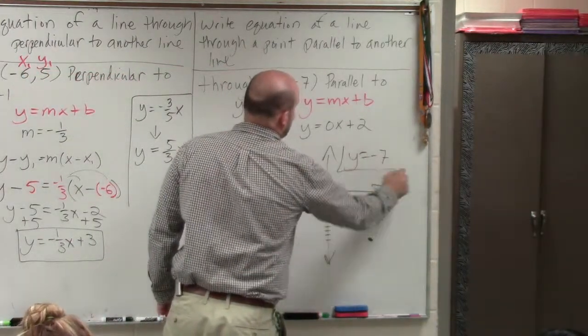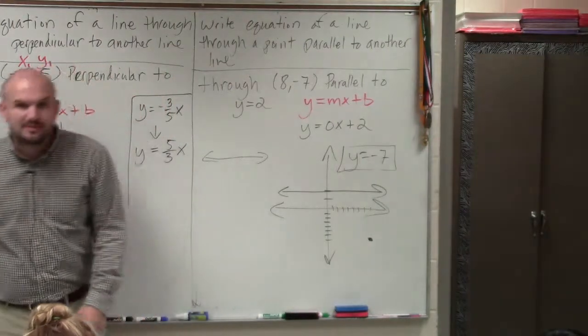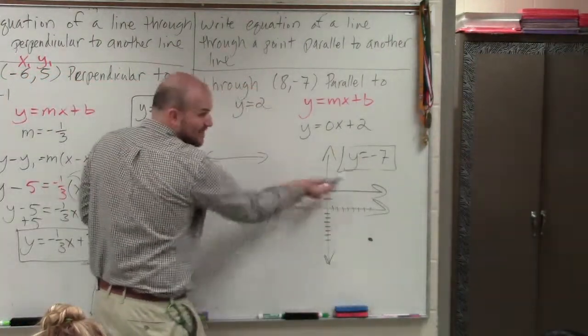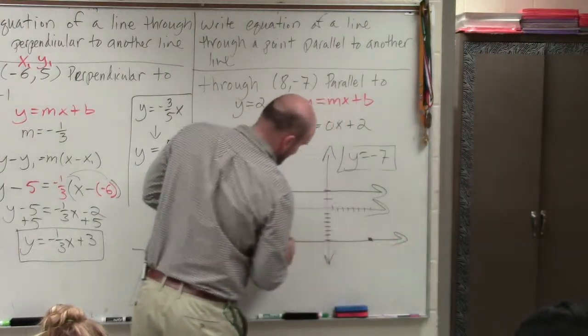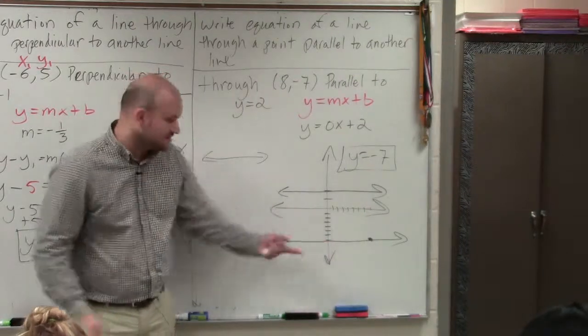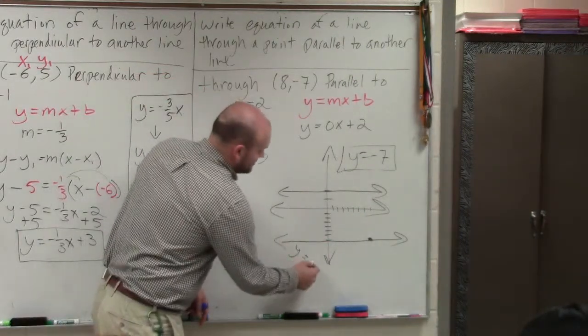You can do the same algebra and stuff that we did before. But in this case, you can see that the line has to be parallel to this. So it has to be a horizontal line, and it has to go through that point. Well, at this point, that's negative 7. So y equals negative 7.